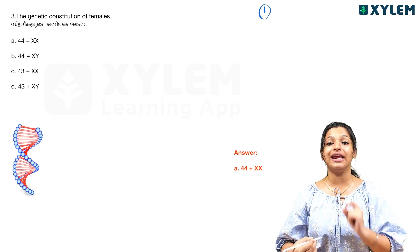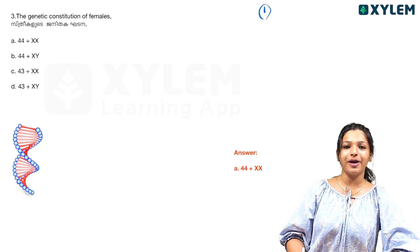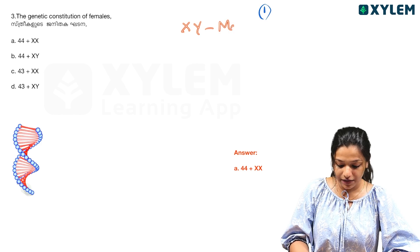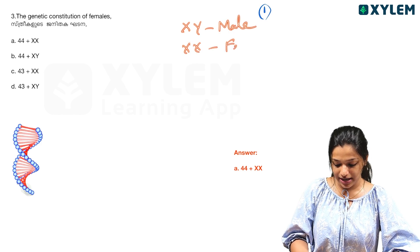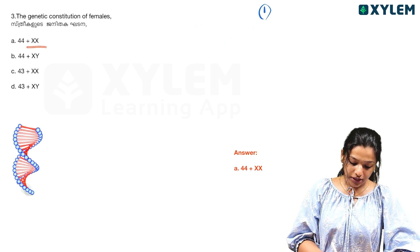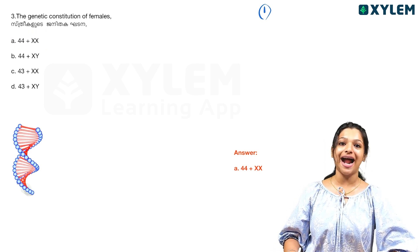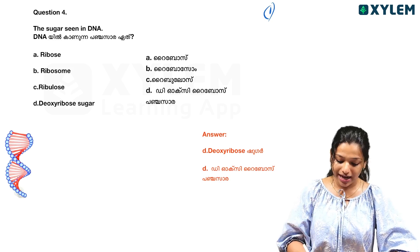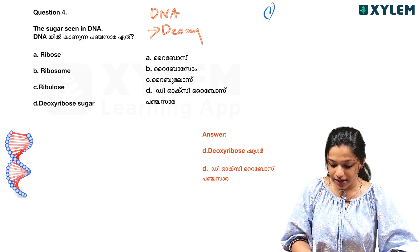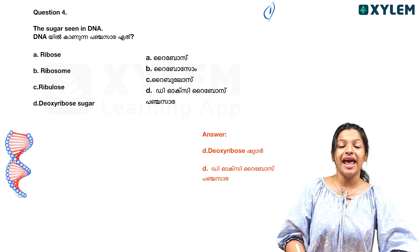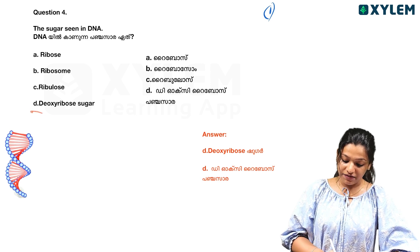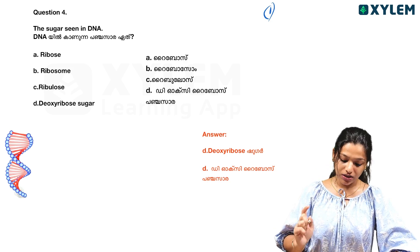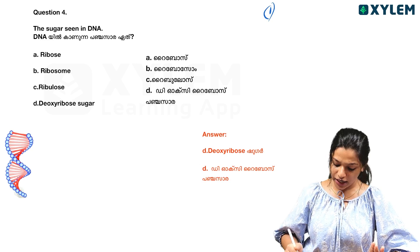The genetic constitution of females — when it comes to the male and the female. What does DNA mean? Deoxyribose sugar — that is what we call DNA. Deoxyribose sugar is different from what we call RNA, where ribose sugar is used instead.